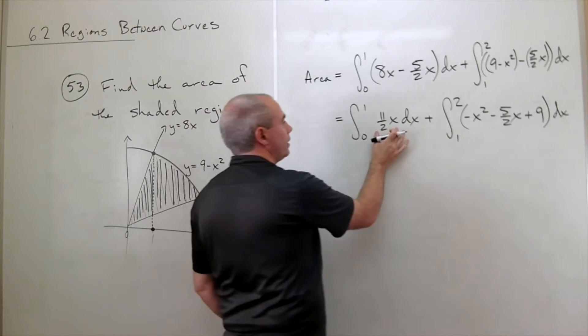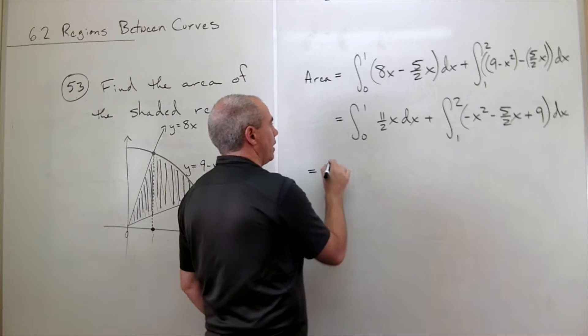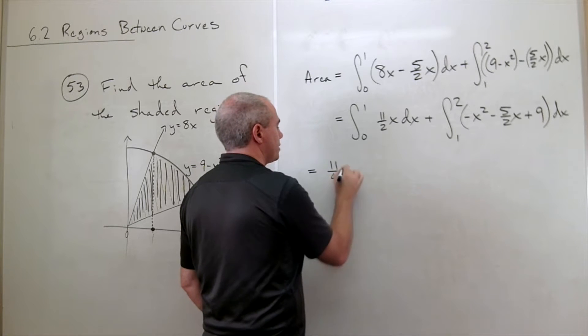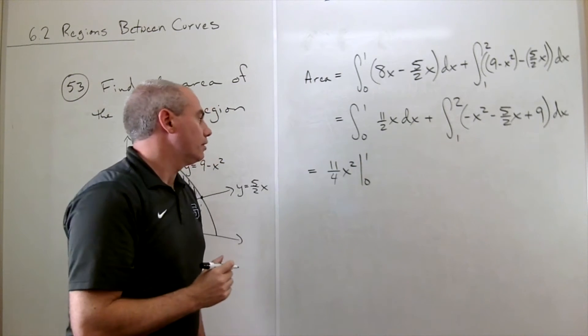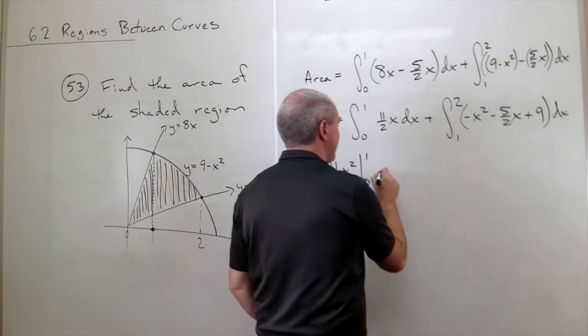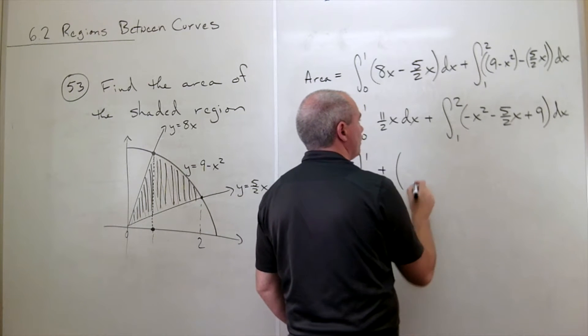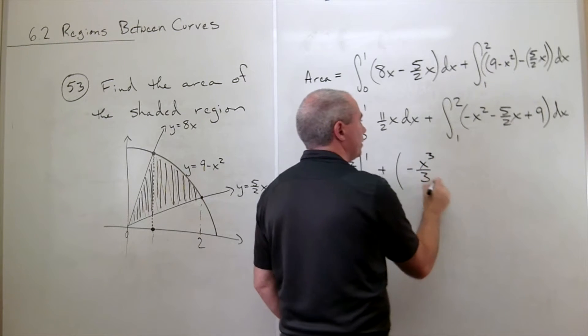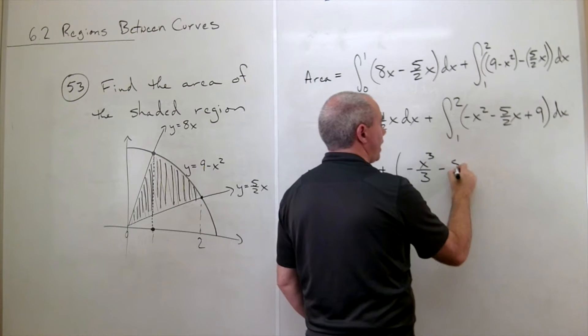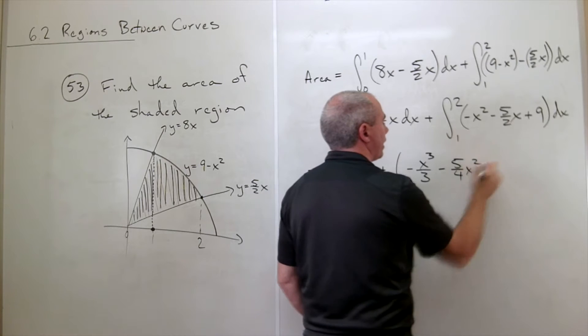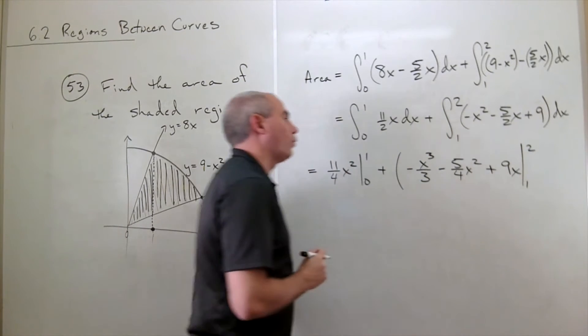Let's take an antiderivative. Antiderivative of 11 halves x would be 11 fourths x squared evaluated from 0 to 1. And then over here we get plus antiderivative of negative x squared, which is negative x cubed over 3. Antiderivative of negative 5 halves x would be negative 5 fourths x squared. And antiderivative of 9 is 9x evaluated from 1 to 2.